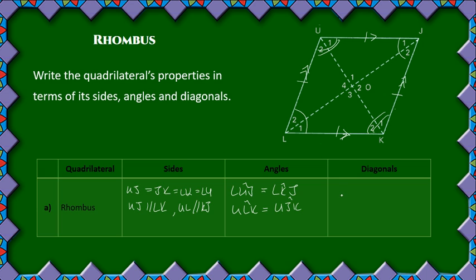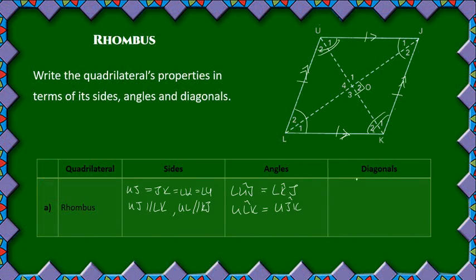And finally the diagonals of the rhombus: the diagonals bisect each other at 90 degrees, so LJ is perpendicular to UK. Since they bisect each other, OJ is equal to OL, and UO is equal to OK. The diagonals also bisect the corner angles — that is, they cut the corner angles in half.